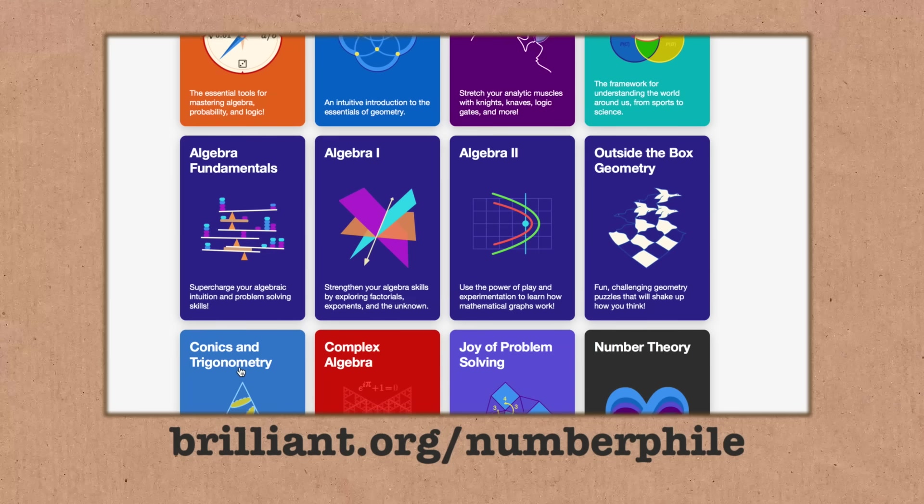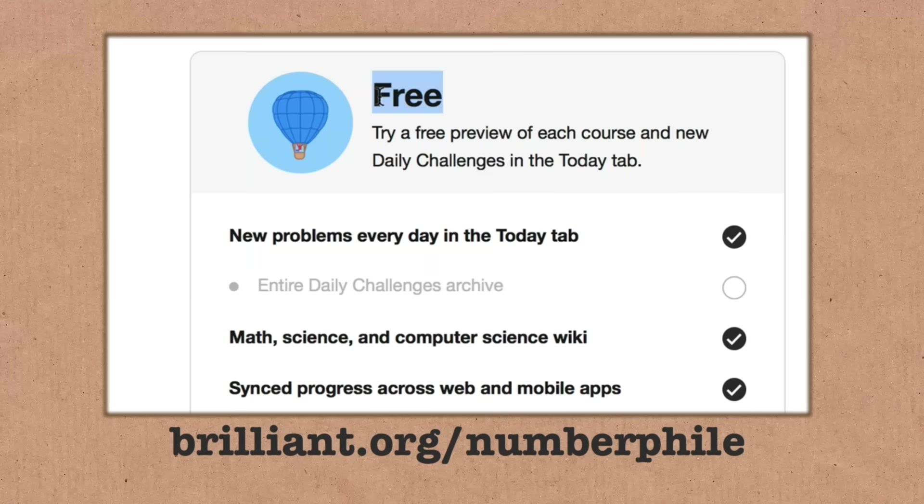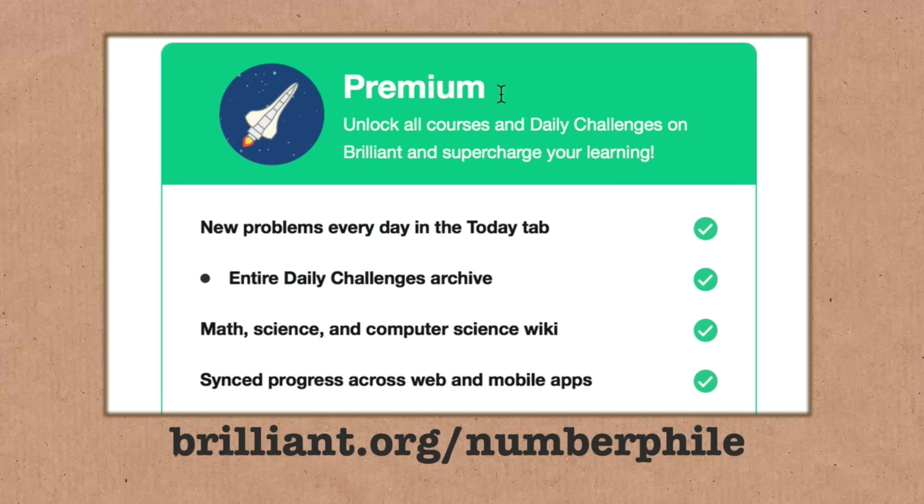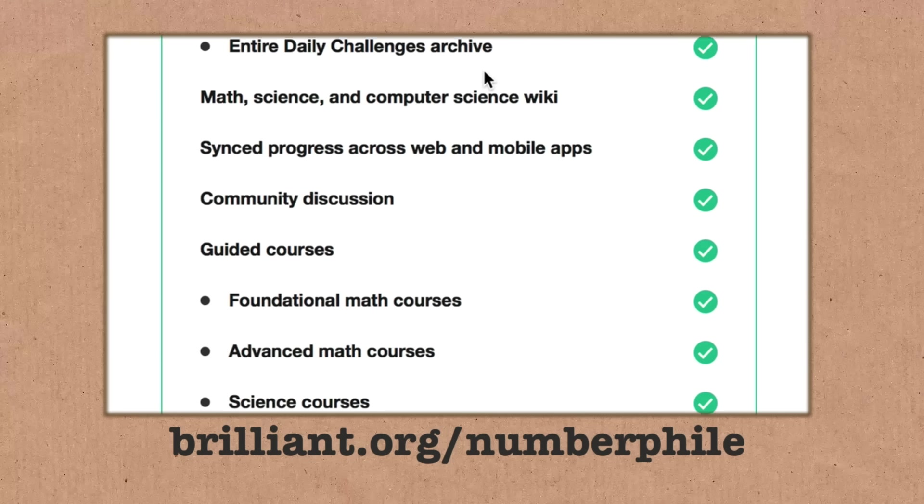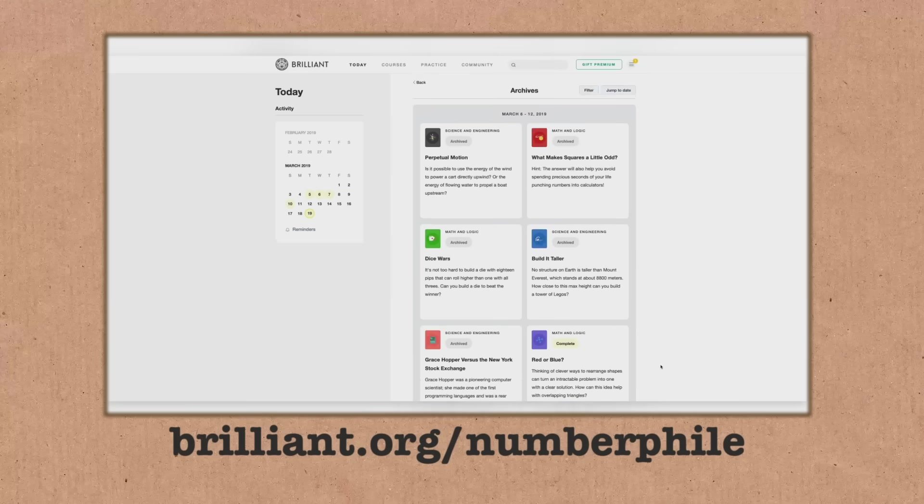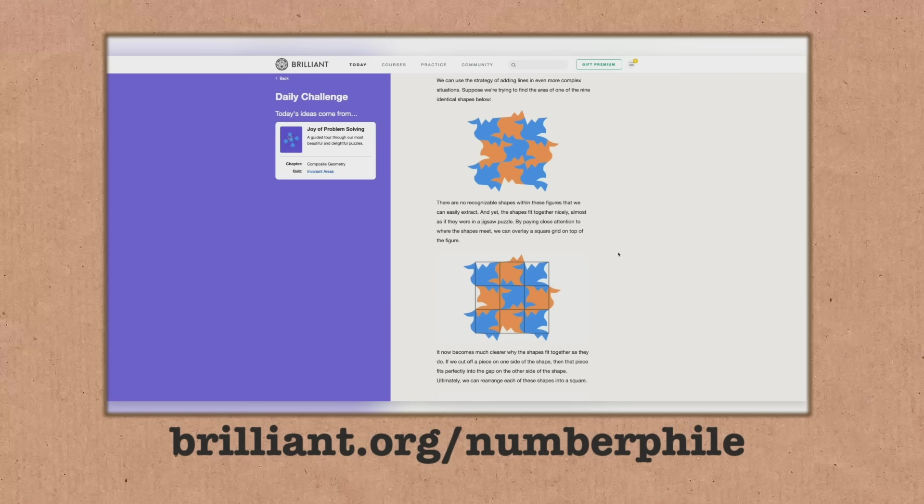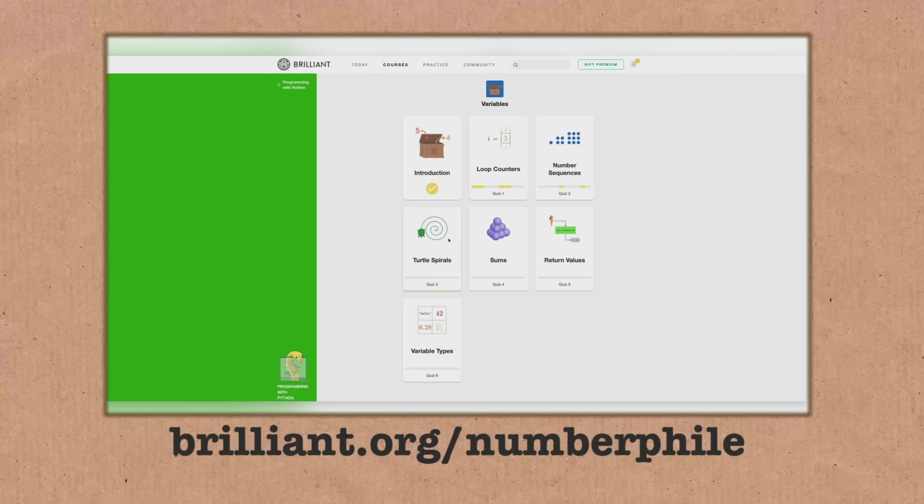Besides the daily challenges, there's quizzes and courses and puzzles, all sorts of great stuff. A lot of it's free. You can go and have a look straight away, or you can sign on for a premium membership. That gives you access to everything. And if you go to brilliant.org slash numberphile, they'll know you came from here, and you'll get 10% off a premium membership. Not a bad deal, that. Brilliant.org, don't forget the slash numberphile, and our thanks to them for supporting this episode.